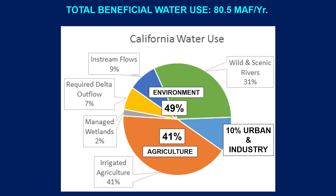Another point to consider is the continuous depletion of groundwater. The cumulative groundwater depletion in the Central Valley has been occurring since the 1960s. During dry years, the withdrawal slope is much steeper than during wet years when some recharge occurs. This continuous depletion trend is worrisome.